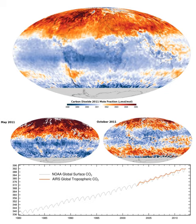Natural sources of atmospheric carbon dioxide include volcanic outgassing, the combustion of organic matter, wildfires, and the respiration processes of living aerobic organisms. Man-made sources of carbon dioxide include the burning of fossil fuels for heating, power generation and transport, as well as some industrial processes such as cement making. It is also produced by various microorganisms from fermentation and cellular respiration.